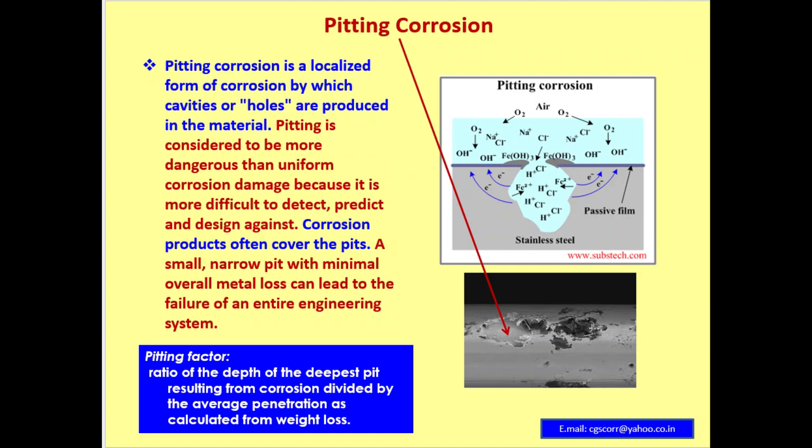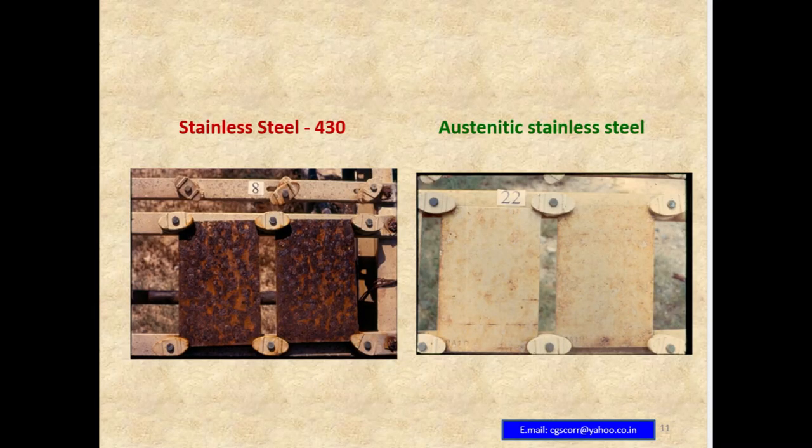A small, narrow pit with minimal overall metal loss can lead to failure of an entire engineering system. The pitting factor is the ratio of the depth of the deepest pit resulting from corrosion divided by the average penetration as calculated from weight loss.